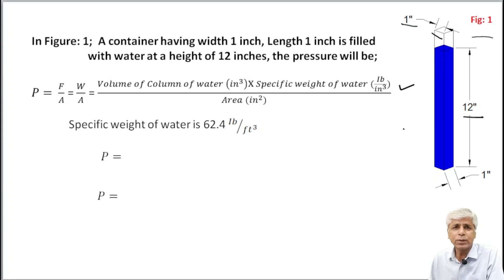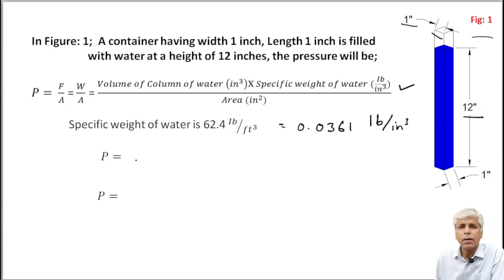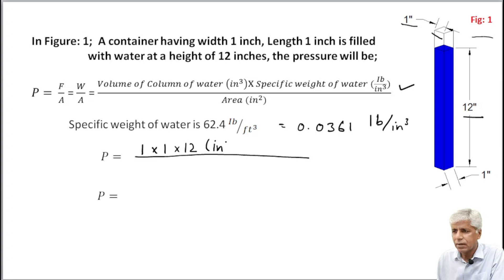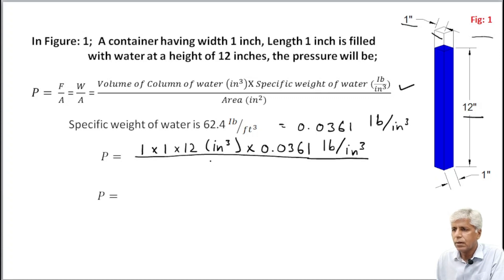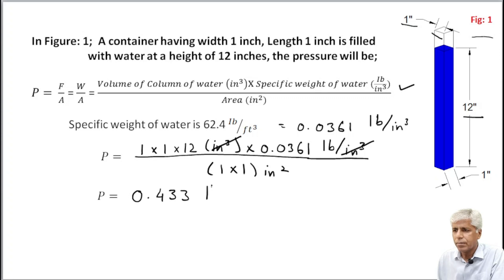We know the specific weight of water is 62.4 pounds per cubic feet. When we convert it into pounds per cubic inch, we divide by 12 to the power 3, and we get 0.0361 pounds per cubic inch. By substituting these values in the formula: 1 inch by 1 inch by 12 inches, multiplied by the specific weight of water 0.0361 pounds per cubic inch, all divided by the area 1 by 1 square inches. The cubic inch units cancel, and we get 0.433 pounds per square inch.